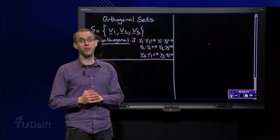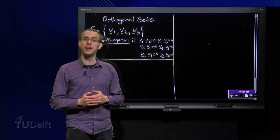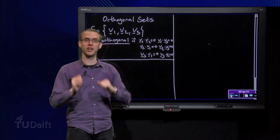You know what we mean if we say that two vectors are orthogonal: they are perpendicular to each other.